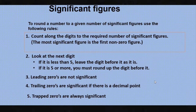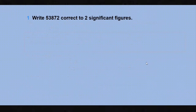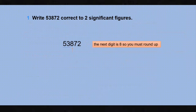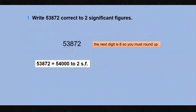Our first question: write 53,872 correct to two significant figures. Since we want two significant figures, we look at the third digit, which is 8. Since 8 is five or more, we round up the previous digit. We add one to the 3, making it 4, so the answer becomes 54,000 to two significant figures.